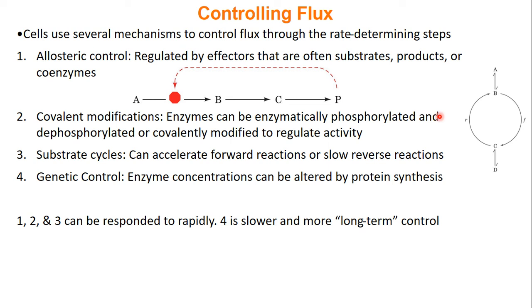The last type of control is enzyme concentration: the less enzyme you have, the slower metabolism will be, and you can do this by altering protein synthesis and protein destruction. Allosteric control, covalent modification, and substrate cycles can all be done rapidly, while changing enzyme concentration is much slower — it's more your long-term solution. If you want to speed up or slow down metabolism long-term, you modify enzyme concentrations; for short-term changes, you use the other three. And that's it for this video.